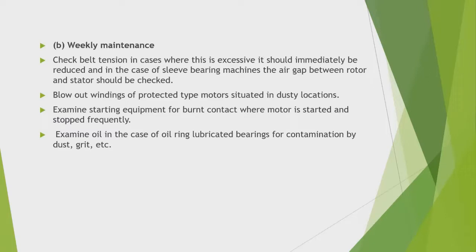Weekly maintenance: check belt tension — where excessive, it should be immediately reduced. In the case of sleeve bearing machines, the air gap between rotor and stator should be checked. Blow out windings of protected type motors situated in dusty locations. Examine starting equipment for burnt contacts where the motor is started and stopped frequently. Examine oil in oil ring lubricated bearings for contamination by dust and grit.